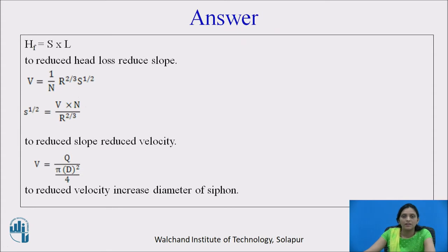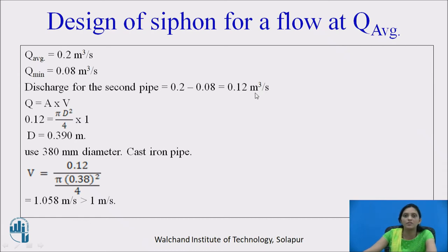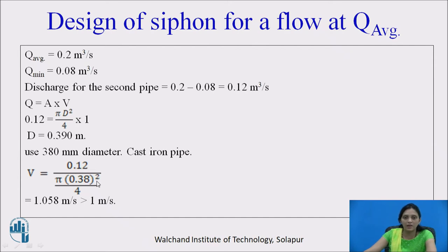Now design the siphon for flow at average discharge. Average discharge is 0.2 m³/s and the first barrel handles minimum discharge of 0.08 m³/s, so the second barrel handles 0.2 − 0.08 = 0.12 m³/s. Find the diameter for 0.12 m³/s: it is 0.39 m. Consider a diameter less than 390 mm, say 380 mm. Recalculate velocity for discharge 0.12 m³/s with diameter 380 mm: velocity = 1.058 m/s, which is greater than 1 m/s. Hence it is okay.